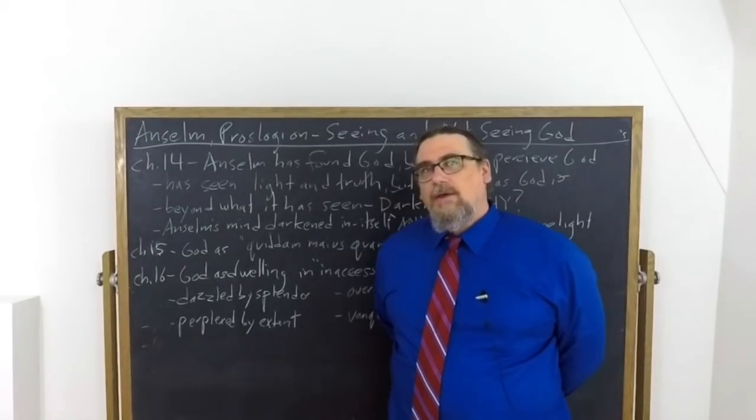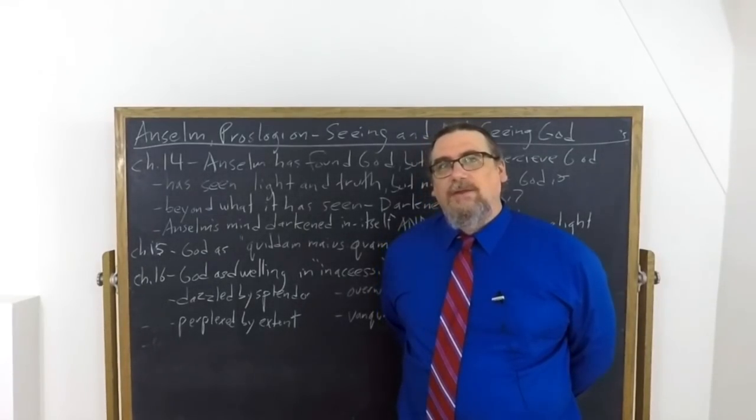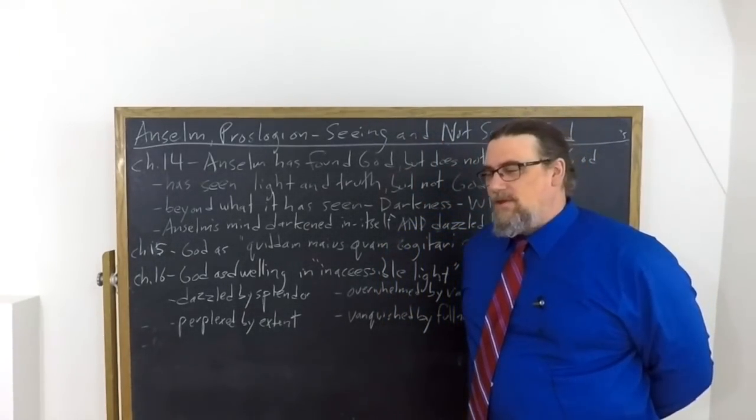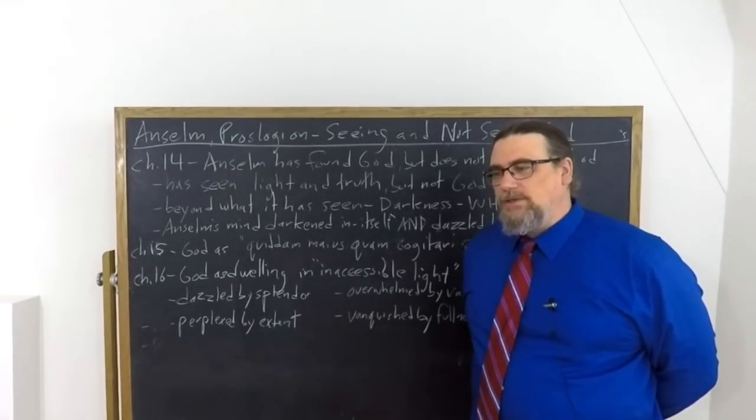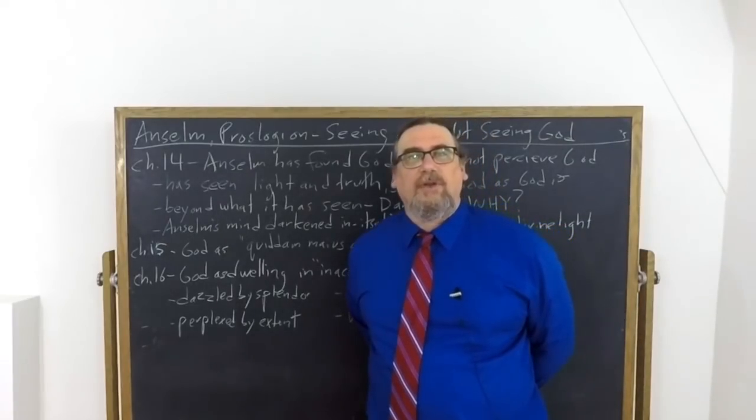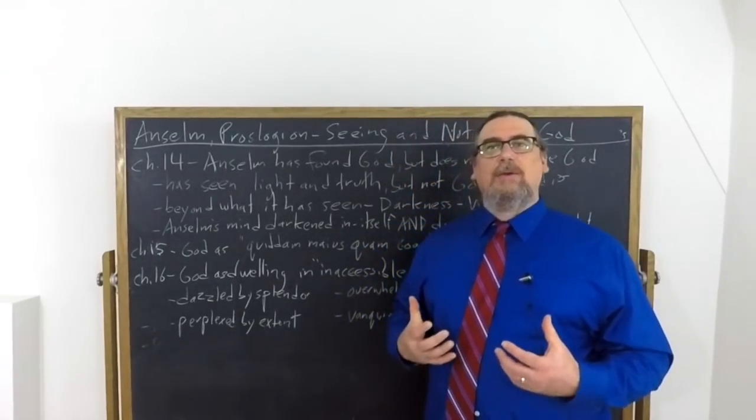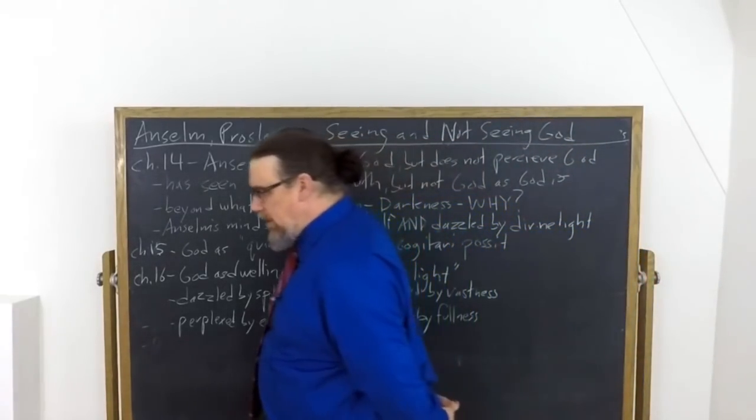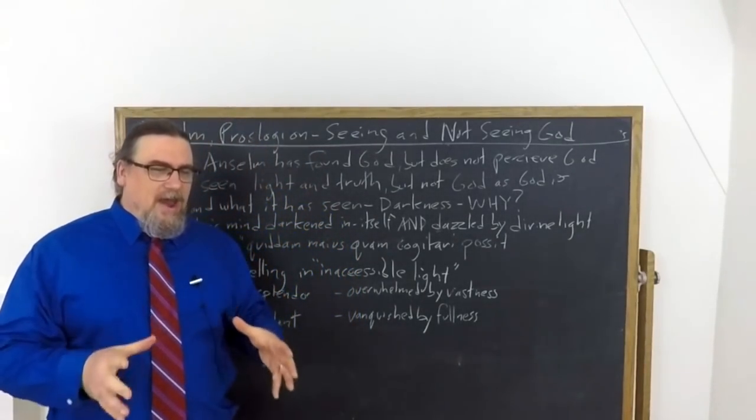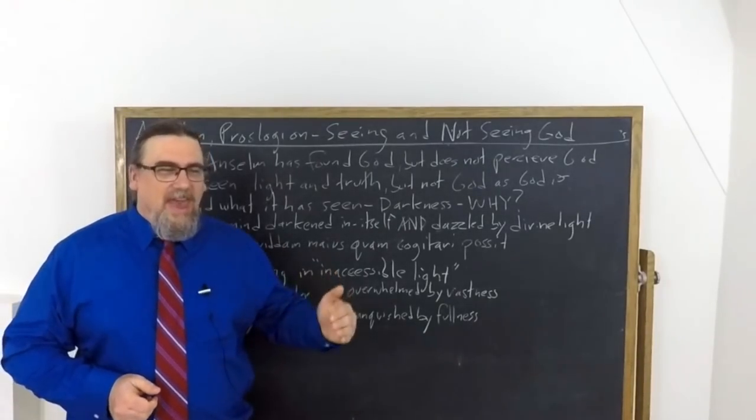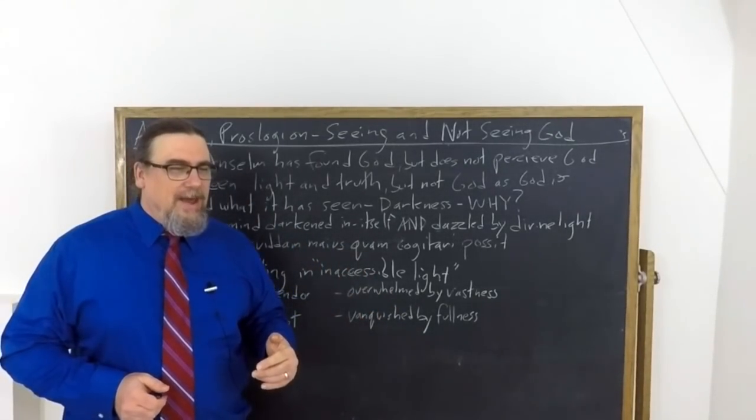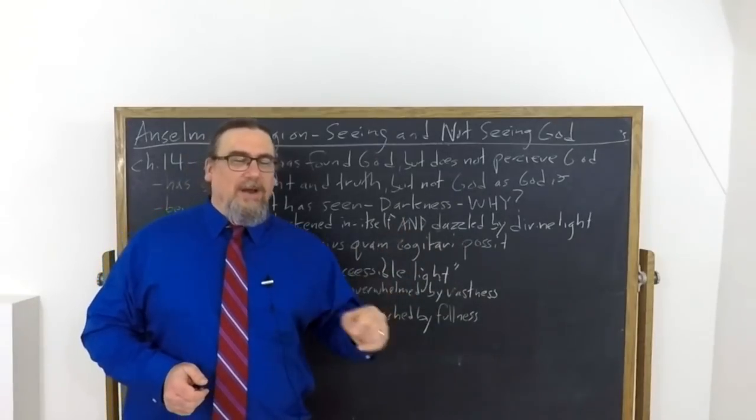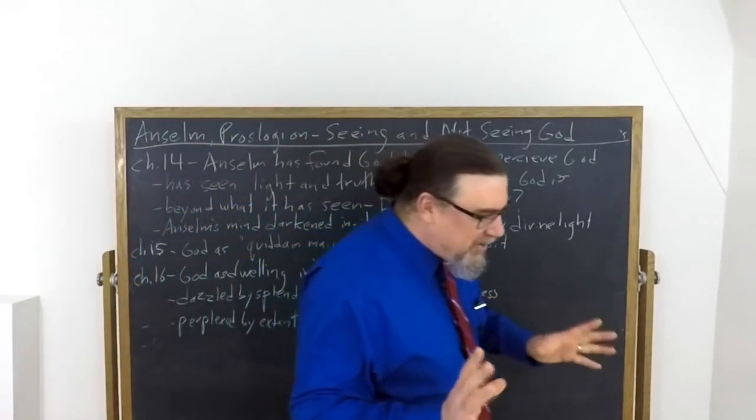And when we try to conceive of what that would be like, we come to a kind of aporia or halt. We're not able to fully conceptualize that. And he'll go on in chapter 15 and reframe this in terms of the argument. If you recall, the unum argumentum, the single argument, took off to prove that God exists and God is all these other things as well, the divine attributes, by saying that God was quo maius cogitari non possit. That is, God is that than which a greater cannot be conceived or thought, however you want to translate cogitari. Here, Anselm says God not only is that, God not only is that than which a greater cannot be thought, God is also something greater than what can be thought.